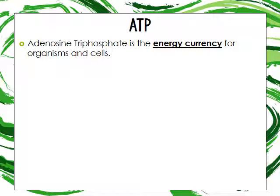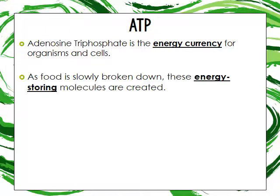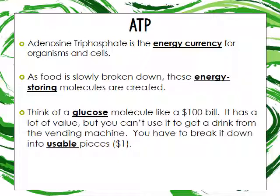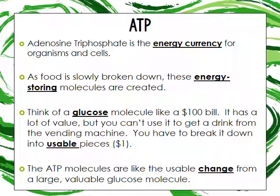ATP is the energy currency for organisms and cells. As food is slowly broken down, energy-storing molecules are created. Think of glucose like a hundred dollar bill — it has a lot of value but you can't use it to get a drink from a vending machine. You have to break it down into usable pieces like a dollar bill. ATP molecules are the usable change from the large valuable glucose molecules.